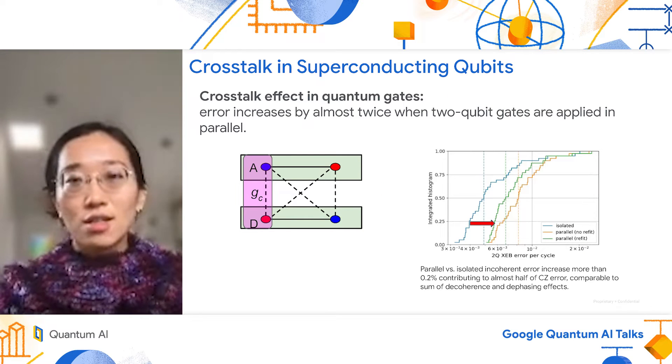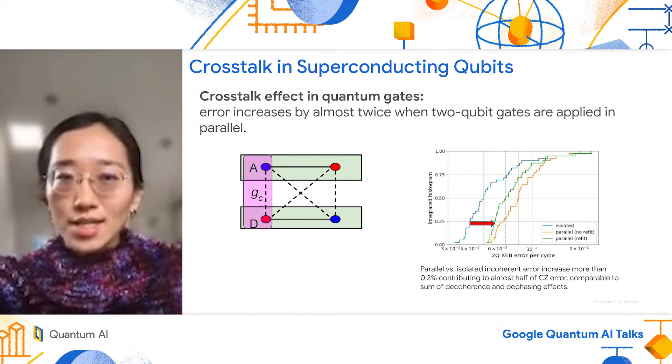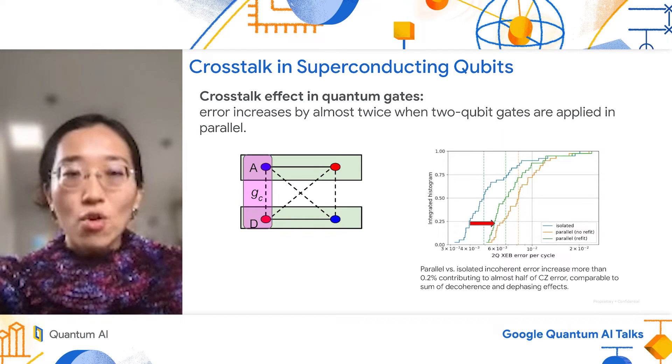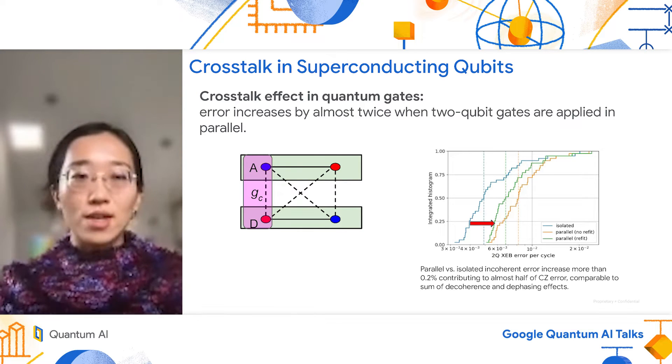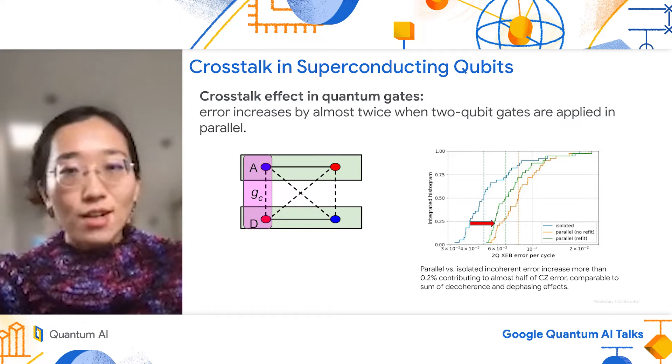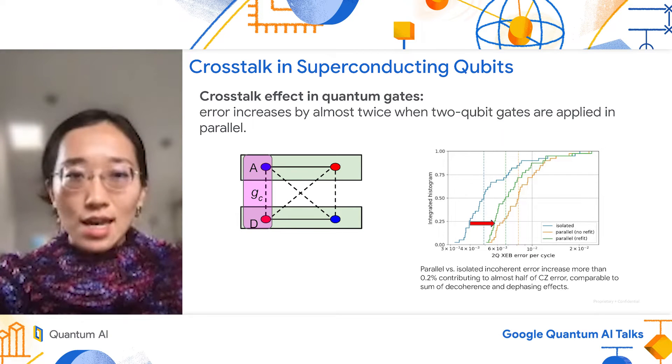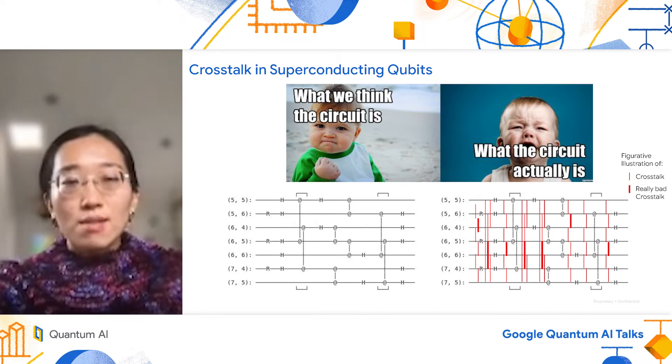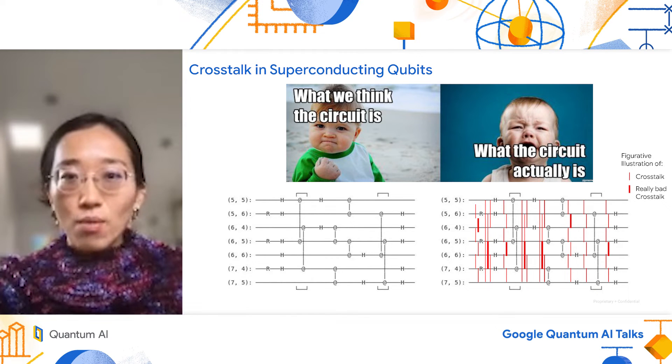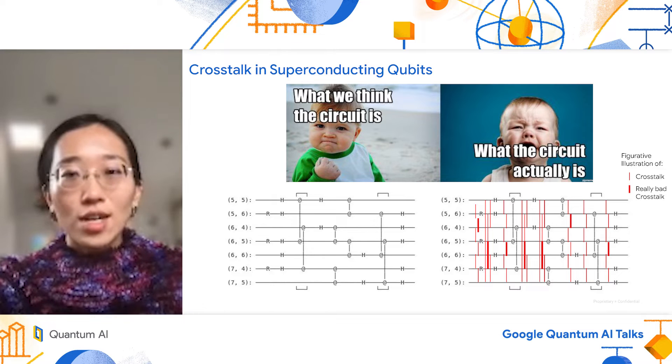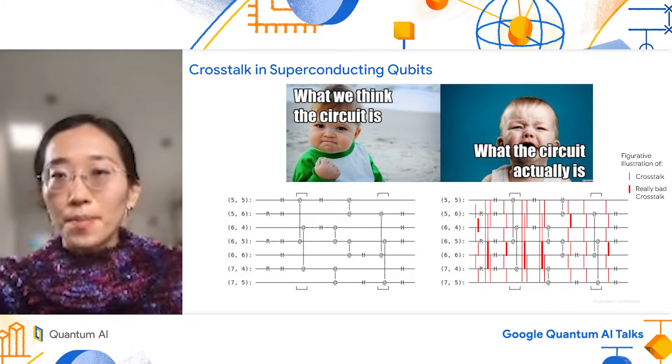So given such prevalent, many different channels of crosstalk, what's the overall effect in quantum computation? The simplest benchmark is to look at gate error. When there is no unwanted crosstalk between qubits, we expect the gate error to be independent of what the neighbors are doing. However, in reality, we see almost a factor of two increase in gate error when operating CZ gates in parallel. In the broader context of a quantum circuit, instead of the beautiful quantum circuit represented on the left, we will really be executing a circuit on the right where we have crosstalk between different pairs of qubits throughout different moments of the circuit.